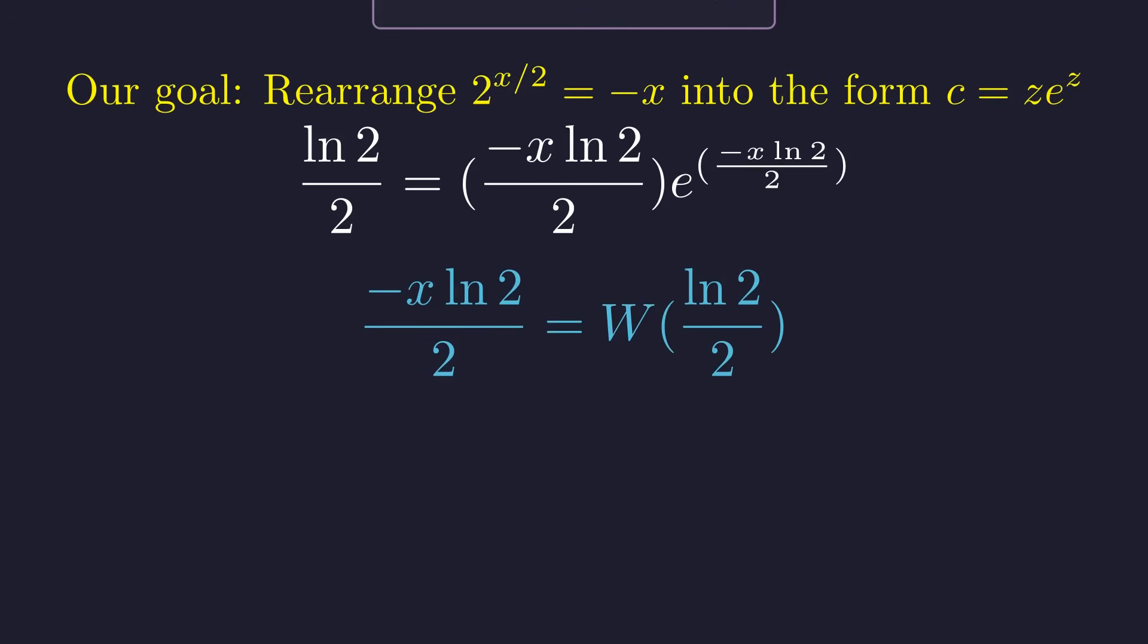Now we can apply the Lambert W function to both sides. Since our argument is positive, we use the principal branch which gives us a unique real value. Now we just need to solve for x using some straightforward algebra. And there we have it, the exact symbolic form of our third and final solution, expressed in terms of the Lambert W function.